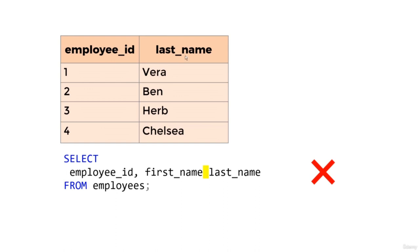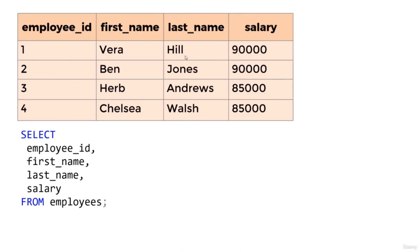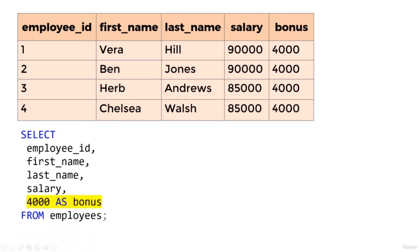Something else we can do is create our own virtual columns within the query. For example, let's say we wanted to add a column called bonus with a value of $4,000. All we need to do is include an expression in our SELECT clause: 4000 AS bonus. This gets added on as a column in the query result — but this only exists within the query result; no column has been added to the employees table. This is what we call an expression.